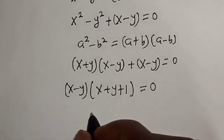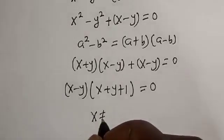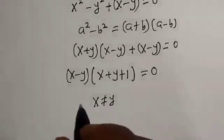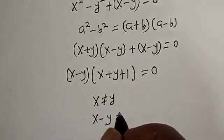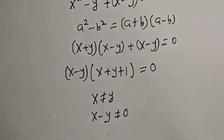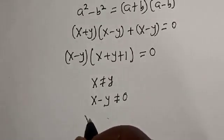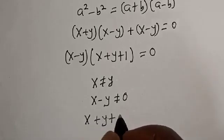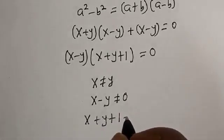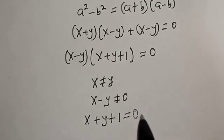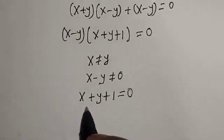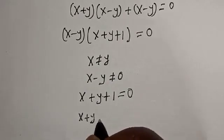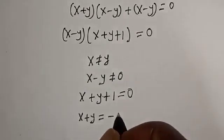Remember that we said x is not equal to y, therefore (x minus y) cannot equal 0. So we must have x plus y plus 1 equals 0, which gives us x plus y equals minus 1.